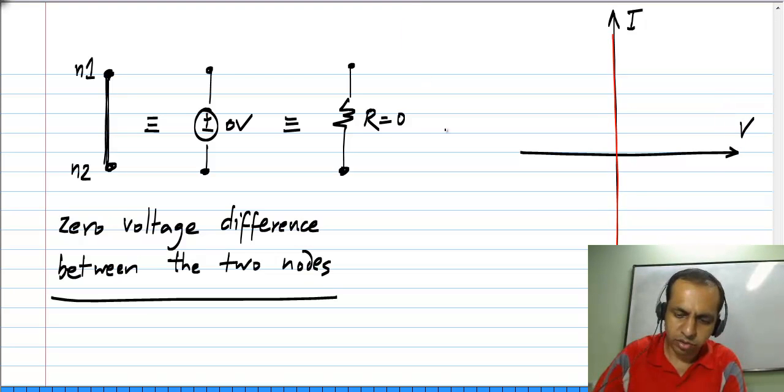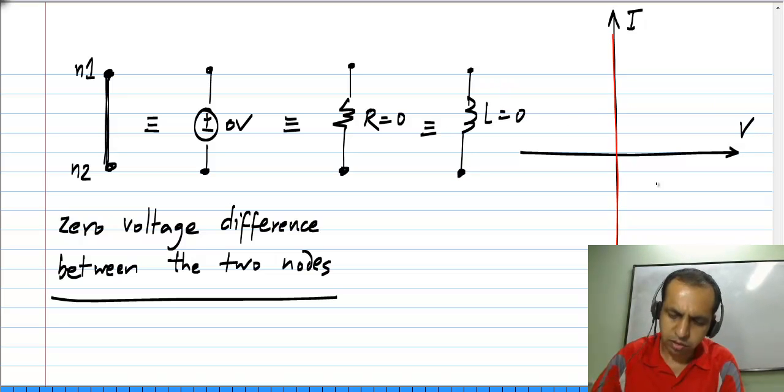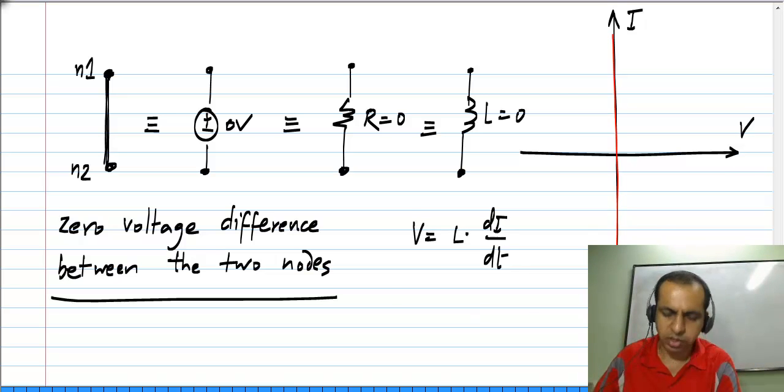Similarly, we can also think of this as zero inductance between two nodes, because we know that V is L times the time derivative of I. This means that for any finite value of the time derivative, the voltage will still be 0.